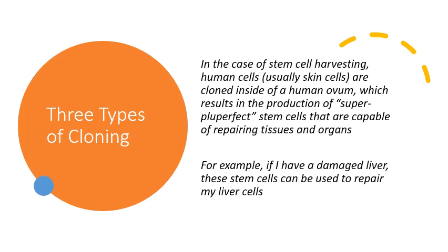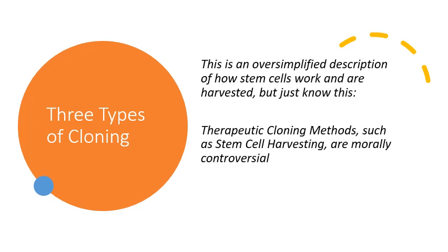For example, if I have a damaged liver and I'm kind of dying from this condition, these super-pluperfect stem cells can be used to repair my liver cells and potentially save my life. Now this is an oversimplified description of how stem cells work and are harvested, but therapeutic cloning methods such as stem cell harvesting are considered morally controversial.